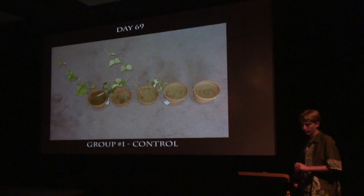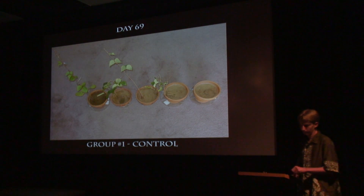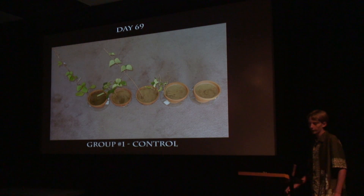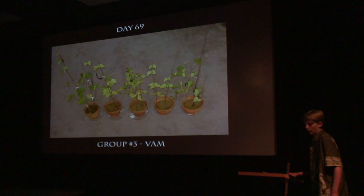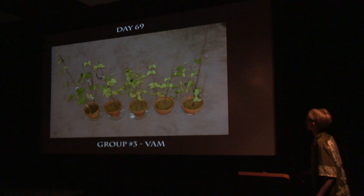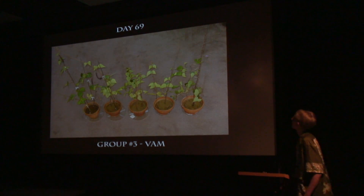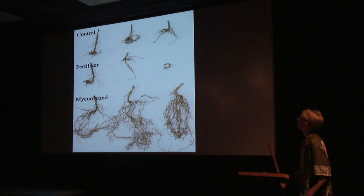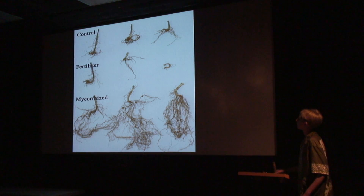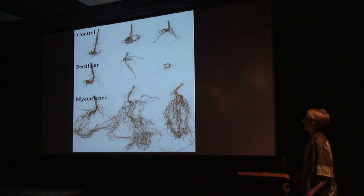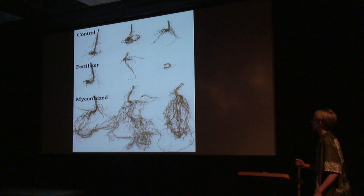Here are some photos of my results from this experiment. You can see that the mycorrhizal group did far better than the others and was the only group to actually produce beans. The root comparison chart shows dramatic differences. The mycorrhizal roots are just amazing, while the fertilized roots are deformed and dwarfed.